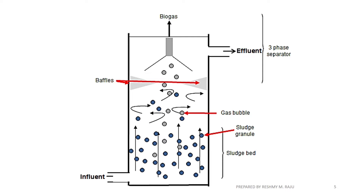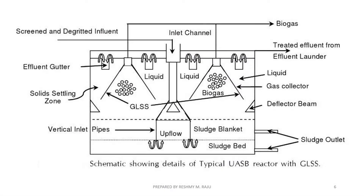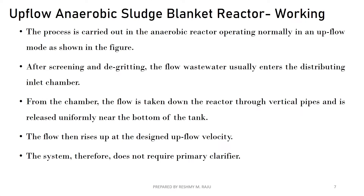A schematic representation shows the use of baffle walls in the reactor. The design uses a deflector beam with an inner plate attached to the baffle. Sludge outlets handle the removal of sludge. The figure illustrates the working and removal mechanism of the UASB reactor.